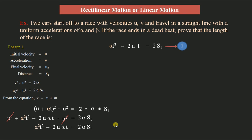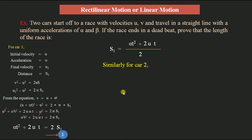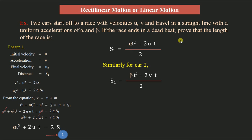Therefore s1 = (αt² + 2ut) / 2. Similarly for car 2, the distance traveled is s2 = (βt² + 2vt) / 2, where v is the initial velocity and β is the acceleration of car 2.